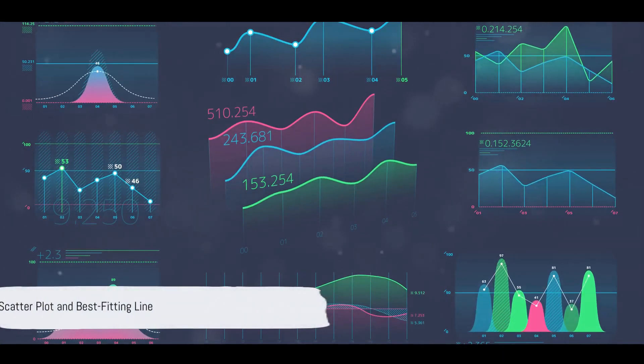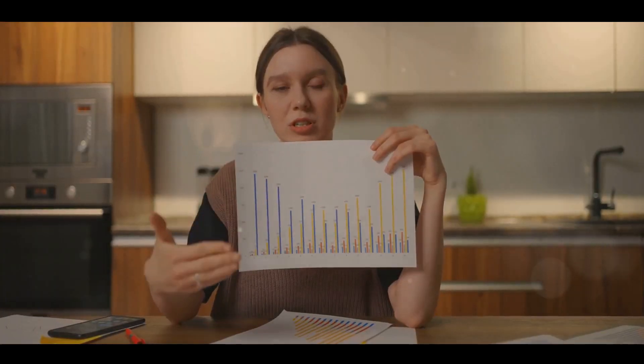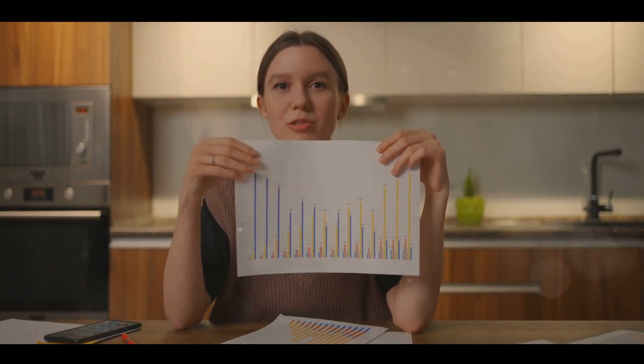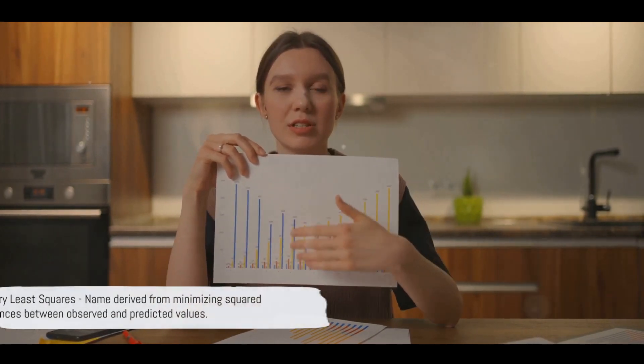Begin by imagining a scatterplot of data points. OLS regression is like finding the best-fitting line through these data points. This line is the one that minimizes the sum of the squared differences, or residuals, between each observed data point and its corresponding point on the line. This is where the name Ordinary Least Squares comes from.